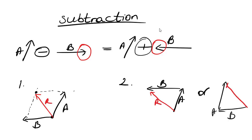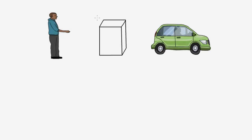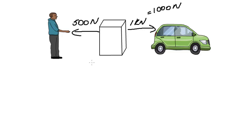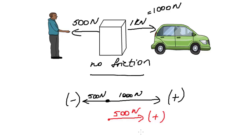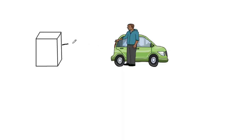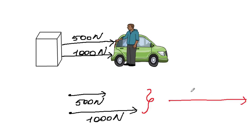All the resultant vectors will be the same. Let's solve an example: a man pulls a box with a force of 500 newtons, and a car pulls with a force of 1 kilonewton. Assuming the ground is frictionless, I'll draw a free body diagram. Taking the right side as positive and left as negative, adding them gives positive 500 newtons — the box moves right. If both man and car pull in the same direction with 500 N and 1000 N respectively, the resultant force is 1500 newtons in the positive direction.